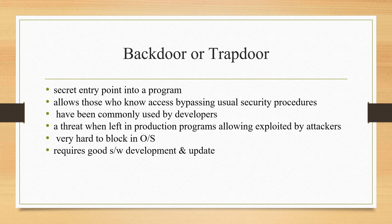What is meant by a backdoor? A backdoor, also known as a trap door, is a secret entry point into a program that allows someone who is aware of it to gain access without going through the usual security access procedures. Programmers have used backdoors legitimately for many years to debug and test programs — such a backdoor is called a maintenance hook. This is usually done when the programmer has developed an application with an authentication procedure or a long setup requiring the user to enter many different values to run the application. To debug the program, the developer may wish to gain special privileges or to avoid all the necessary setup and authentication.